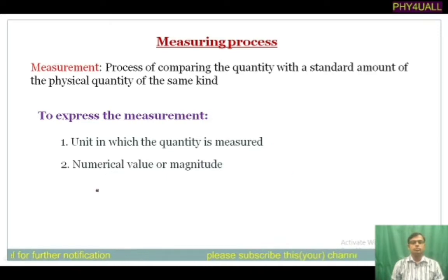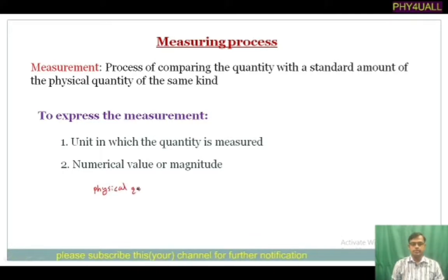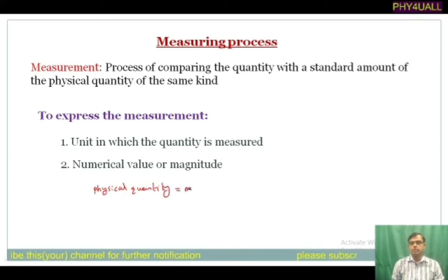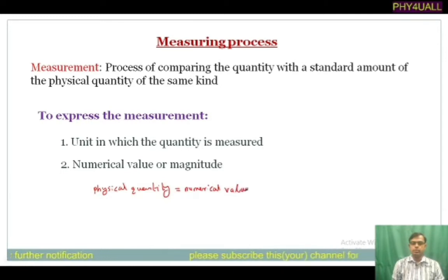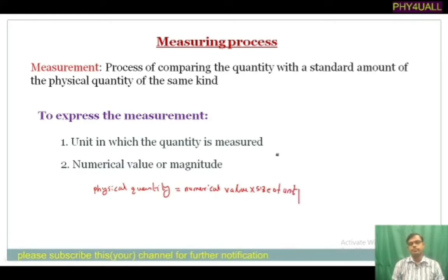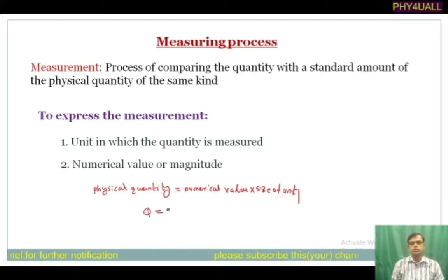To express the measurement we require two things: the first one is the unit in which the quantity is measured, and the next one is the numerical value or magnitude. A physical quantity can be represented as: physical quantity Q is equal to numerical value (N) multiplied by unit (U).